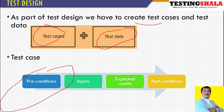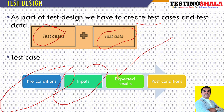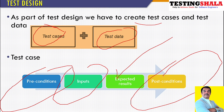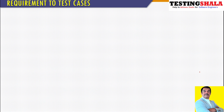The next step is understanding the different components of a test case. A test case will have preconditions — the conditions we should maintain in the application before executing. Then there are inputs we provide to execute the test case. Once we provide the input for a given step, we see the expected results. Once results are there, that becomes the post-conditions.